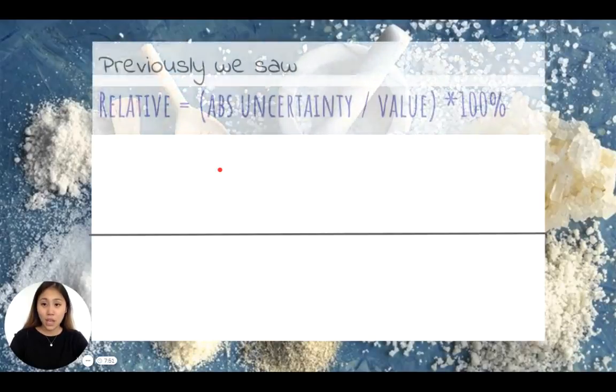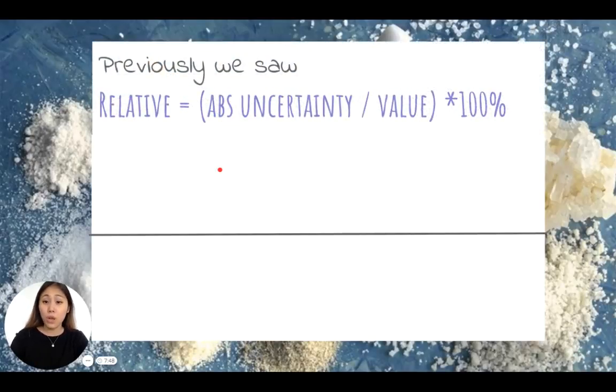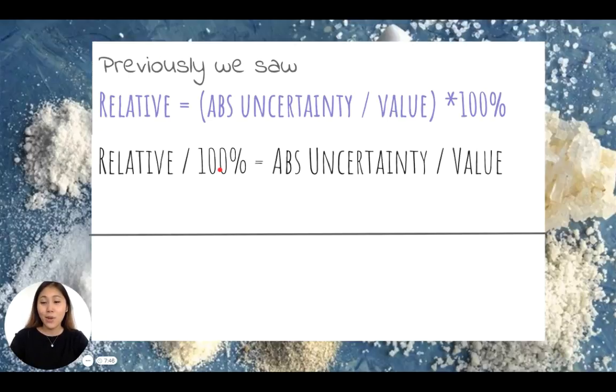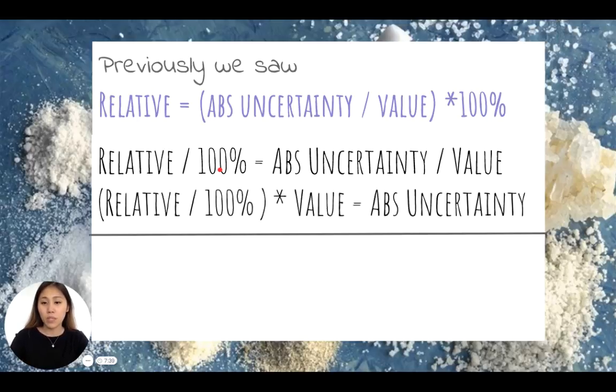This means that with this equation, we can rewrite it as relative divided by a hundred, so dividing a hundred percent on both sides and then multiplying value on both sides.